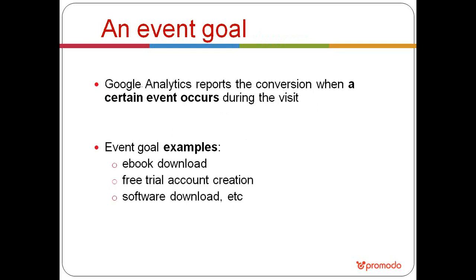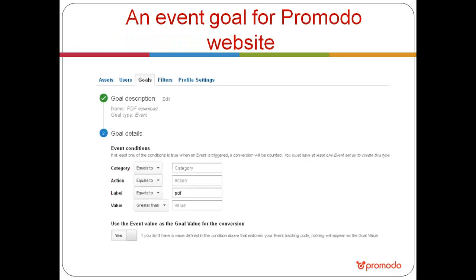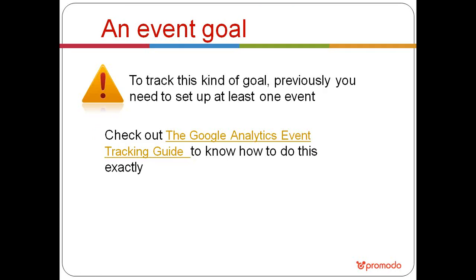The last type of goal is the event goal. Different events may occur on your website — for example, an e-book downloaded, a free trial account created, or software downloaded. You can ask Google Analytics to show a conversion when such an event takes place. You need to first set up what you consider an event on your website, then fill in the corresponding fields in the goal settings. Setting up an event is a bit more challenging than other goal types, so we recommend reading the Google Analytics event tracking guide.